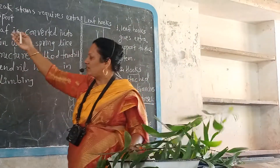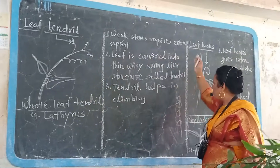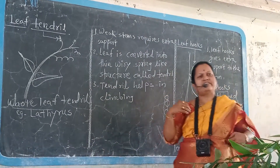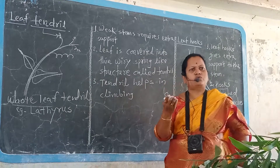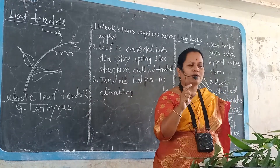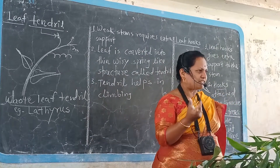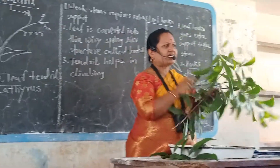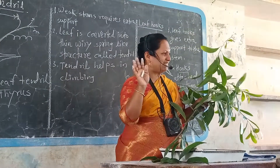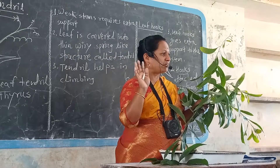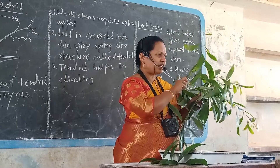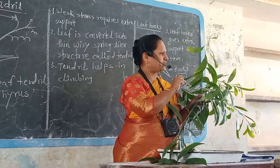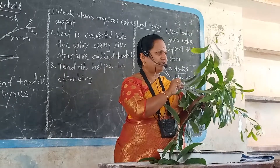The first modification is tendrils, then hooks, then phylode. Leaves are converted into hooks, tendrils, and phylode for many purposes — for extra additional support and for photosynthesis. This Acacia plant is evergreen throughout all the seasons because these phylodes are produced from the petiole and perform the process of photosynthesis.